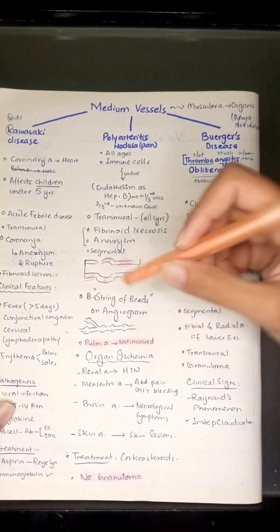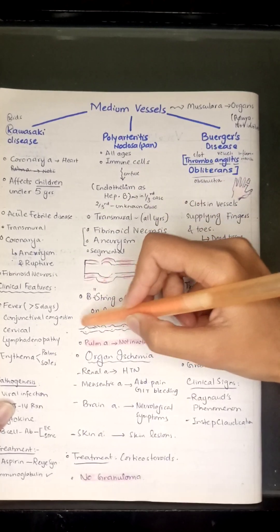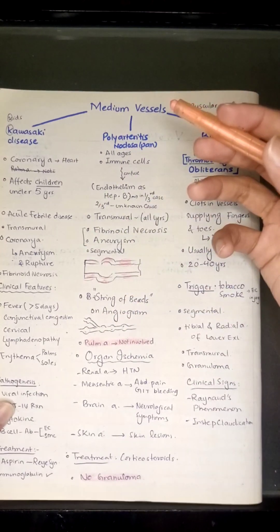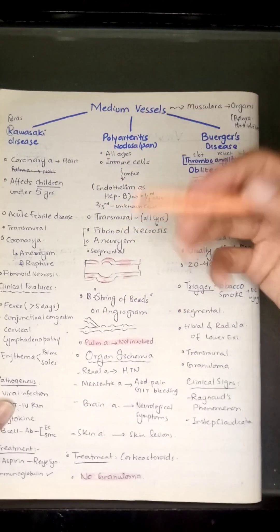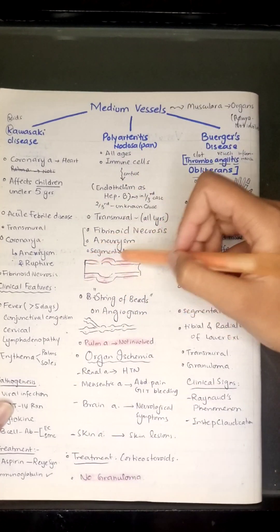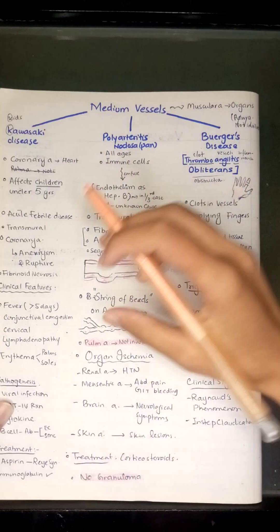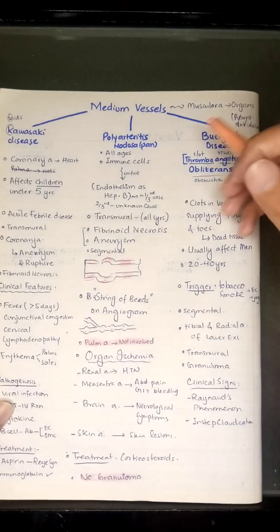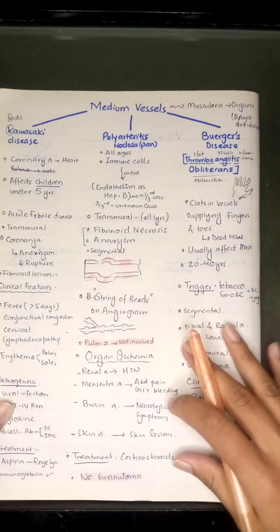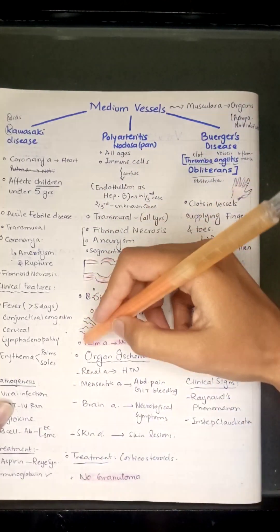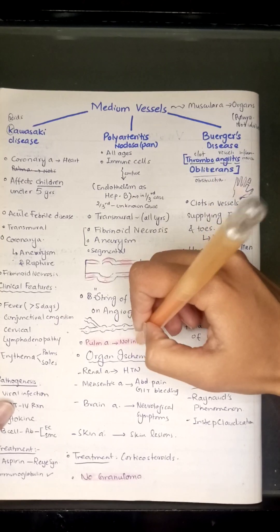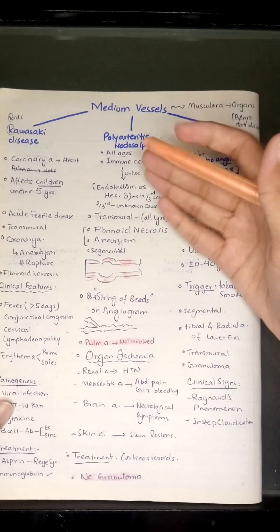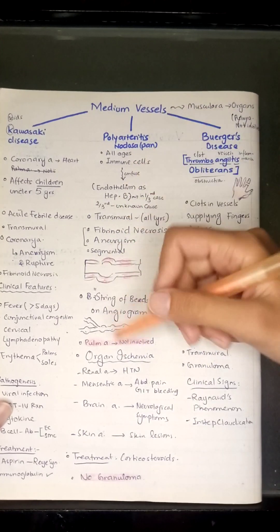Due to multiple aneurysms, the appearance on an angiogram shows a 'string of beads' pattern. PAN is segmental, meaning it affects different segments of the arteries. Importantly, the pulmonary artery is not involved in PAN.